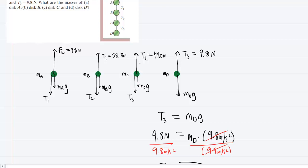Again, because disk C is suspended, the upward T2 force must have an equal magnitude to the downward T3 and gravitational force. So we can come over here for disk C and we'll say that the upward force T2 equals the downward force T3 plus the gravitational force m sub c times g.